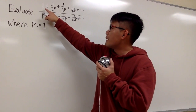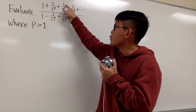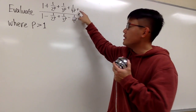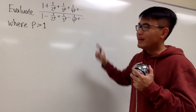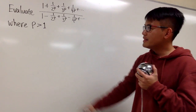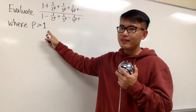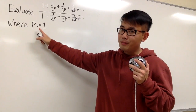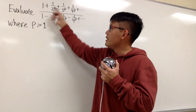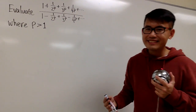If you look at the top, we have 1 plus 1 over 2 to the p, plus 1 over 3 to the p, plus 1 over 4 to the p, and so on. That's just the p-series. And here we have a condition: p is greater than 1. And because p is greater than 1, we know the p-series right here converges.